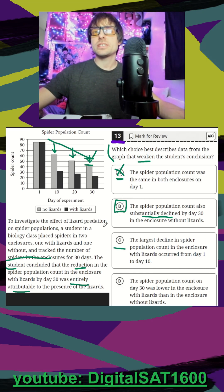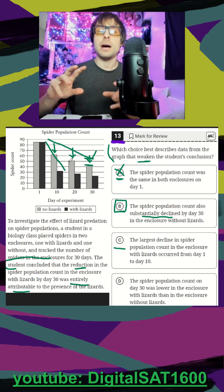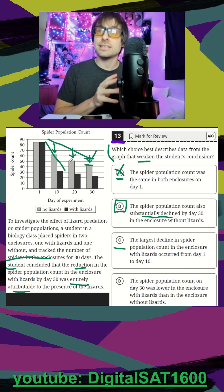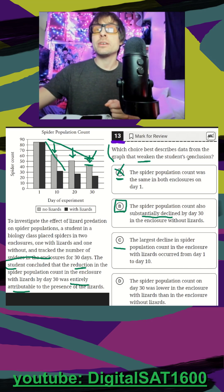And C, the largest decline in the spider population count in the enclosure with lizards occurred from day one to day 10. That is true, that is our biggest decline. And this is why graph answers are not necessarily correct. It's the context that matters. We're looking to weaken their conclusion that it's only because of lizards. C is irrelevant in this aspect.